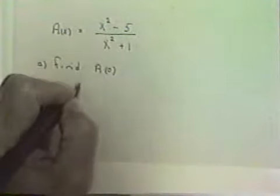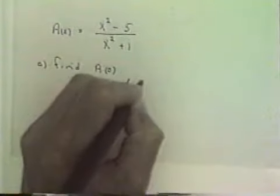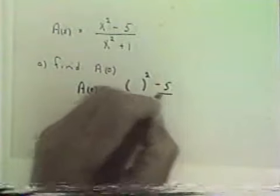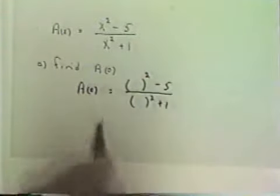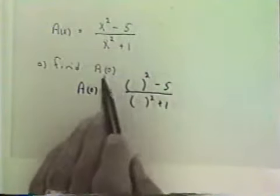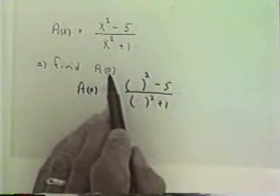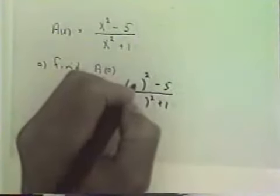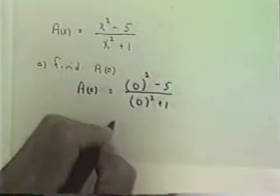So I can say a evaluated at 0 is equal to, I'm just going to put parentheses first as I've been doing. And I'm going to replace the parentheses by 0. Because we're saying that we're going to evaluate the function for x equals 0. That's what it means, evaluate the function for x equal to 0. So I put in a 0 in place of x.